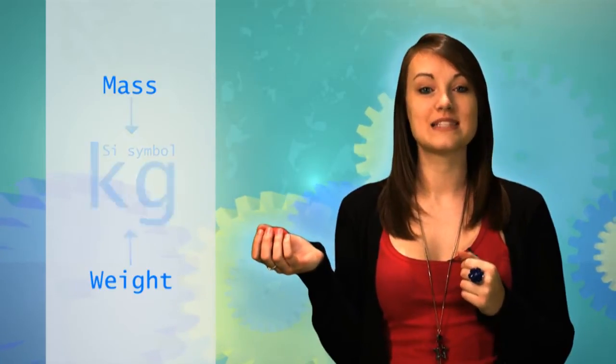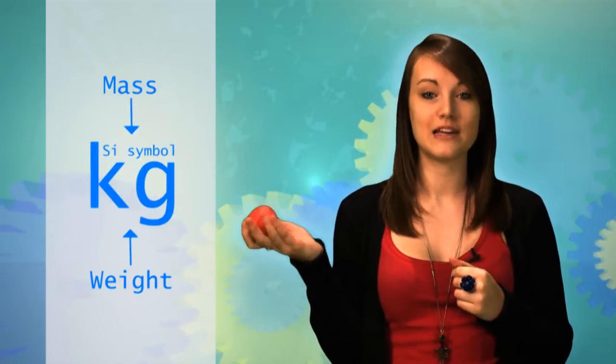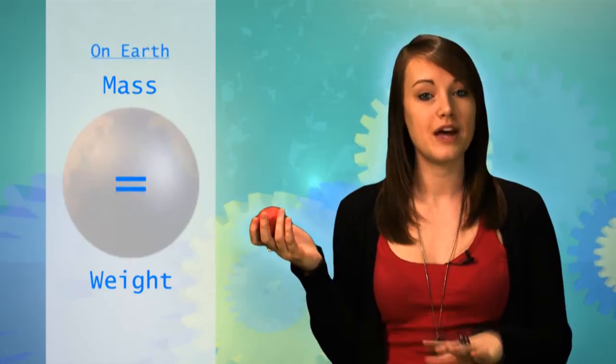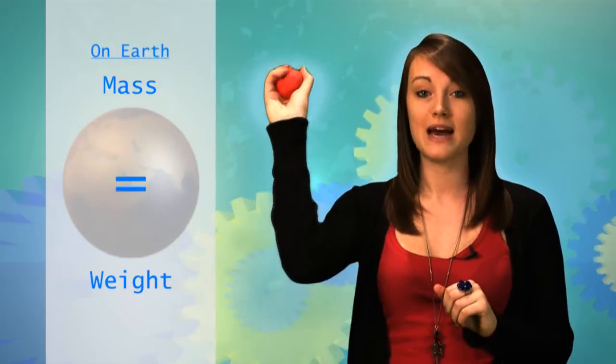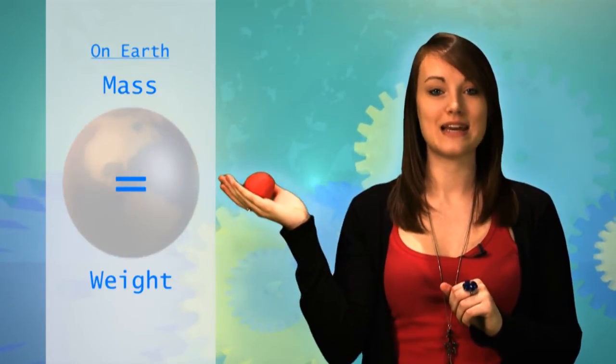The first two terms to consider are mass and weight. Now it's very easy to get these confused as they both use the SI symbol kilogram, and when a material is on Earth, under Earth's gravity, its mass and weight will be the same.